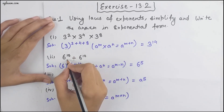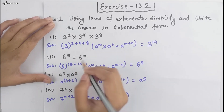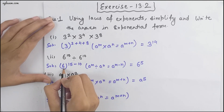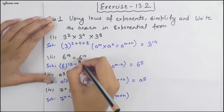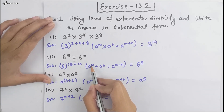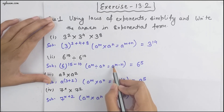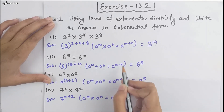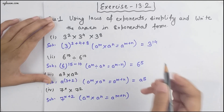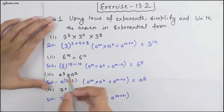Moving to the next part, we have 6 raised to the power 15 divided by 6 raised to the power 10. Again the base is same but the operation is division. For division, the formula is a^m ÷ a^n = a^(m−n), so we get 6 raised to the power 15 minus 10, which equals 6 raised to the power 5.